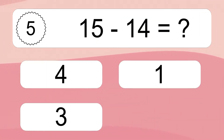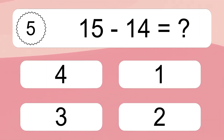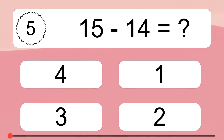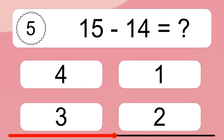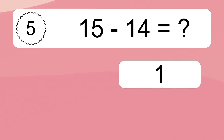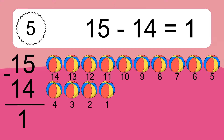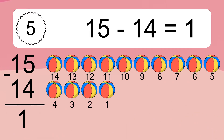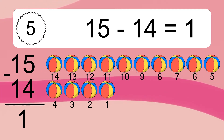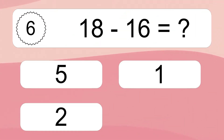15 minus 14 equals what? 15 minus 14 equals 1. Let's count it: 14, 13, 12, 11, 10, 9, 8, 7, 6, 5, 4, 3, 2, 1.